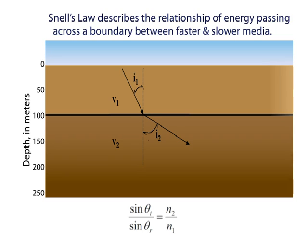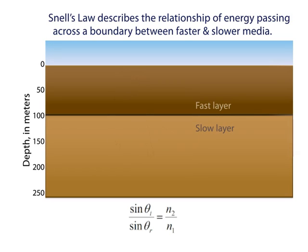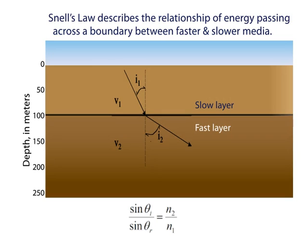Snell's law describes how seismic ray paths bend as they travel from one material into another. They bend toward vertical when going from fast to slow, and bend toward horizontal when going from a slower to a faster material. When the rays are refracted 90 degrees from normal, they travel along the boundary in the fast layer.